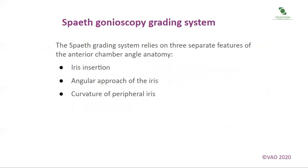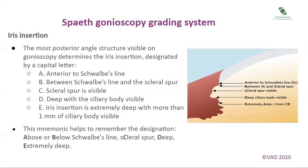The Spaeth gonioscopy grading system relies on three separate features of the anterior chamber angle anatomy: iris insertion, angular approach of the iris, and the curvature of the peripheral iris. The most posterior angle structure visible on gonioscopy determines the iris insertion, designated by a capital letter. A means it is anterior to Schwalbe's line. B is between Schwalbe's line and the scleral spur. C means the scleral spur is visible. D is deep, with the ciliary body visible. E means the iris insertion is extremely deep, with more than 1 mm of ciliary body visible.